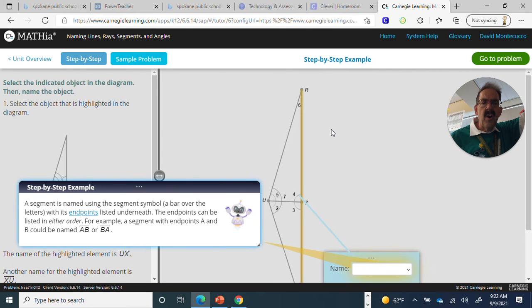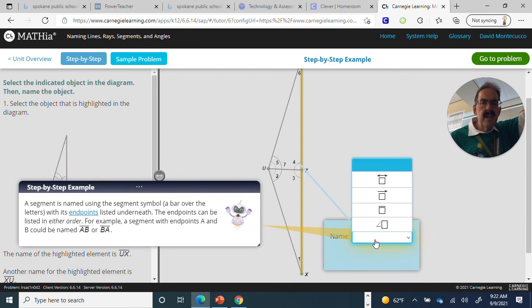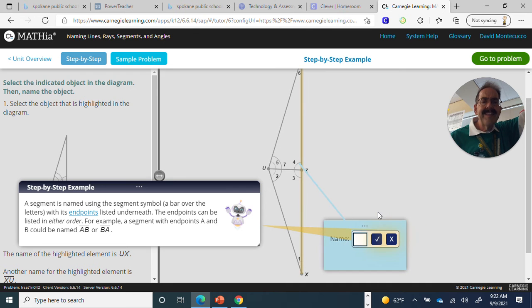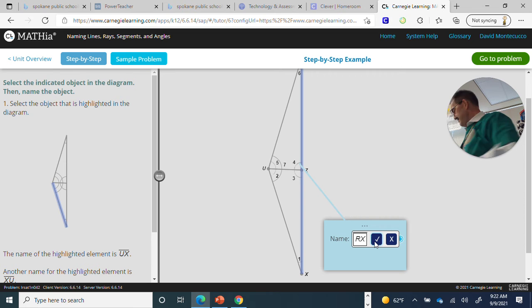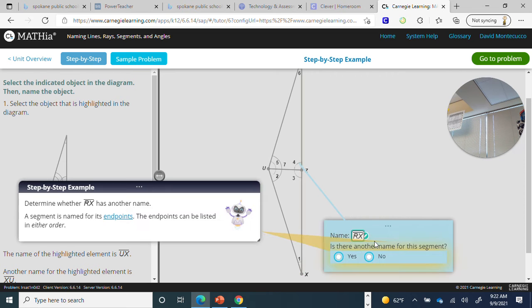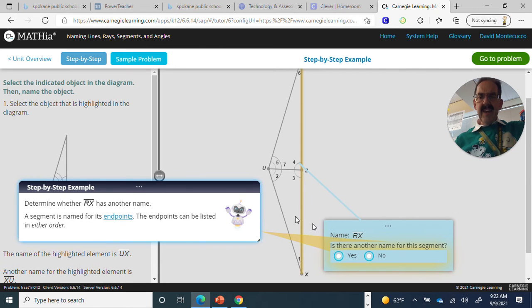This is RX. Looks like a segment to me. RX. And the endpoints. Yes, there is another one. We'll go XR.